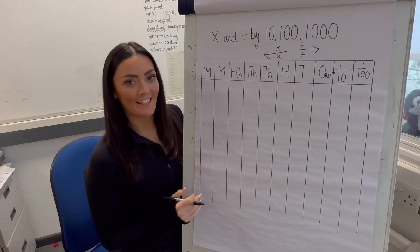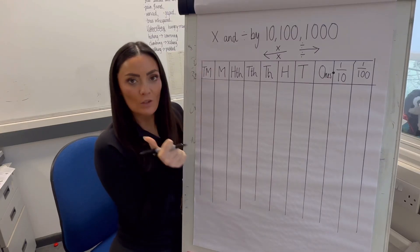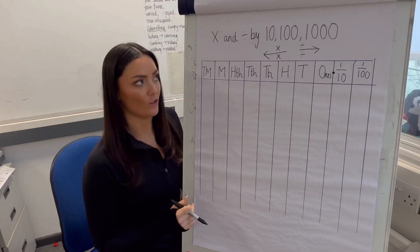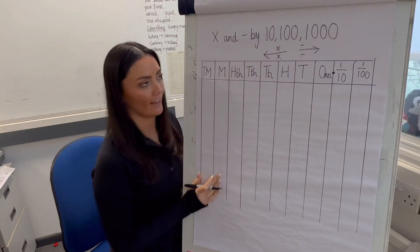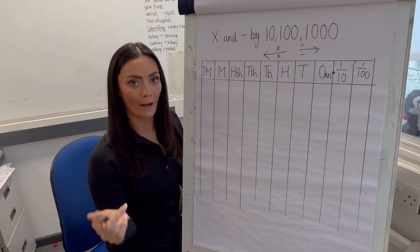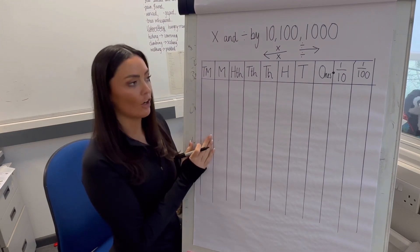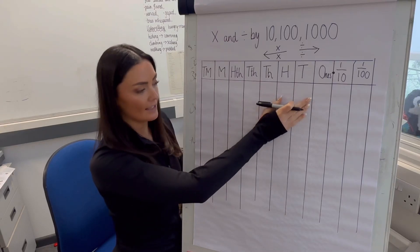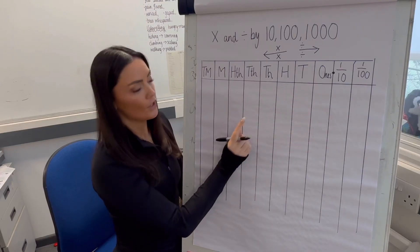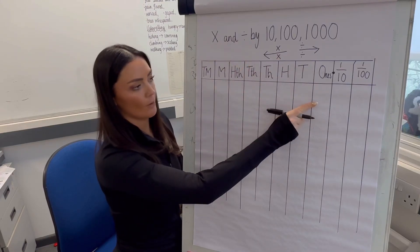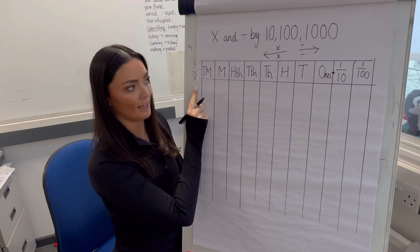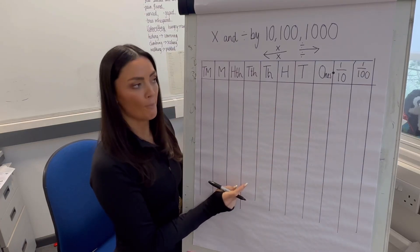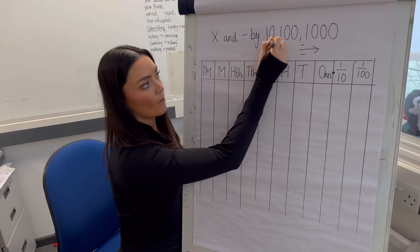We've looked at our formal methods: short and long multiplication, short and long division. The only difference is when multiplying or dividing by 10, 100, or 1000 — we think of this using place value rather than laying it out in columns. When the number gets bigger, we move digits to the left; when smaller, to the right. The number of places moved equals the number of zeros.